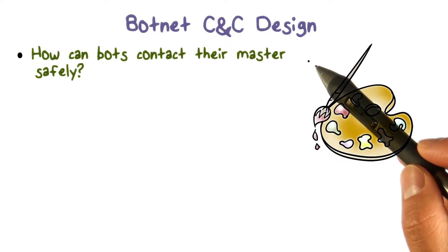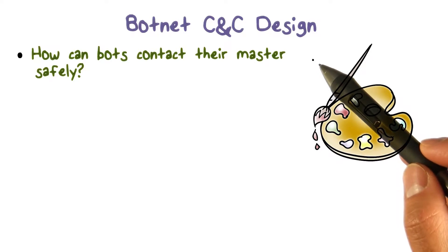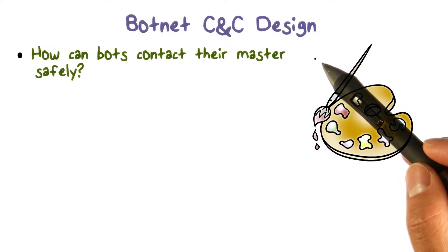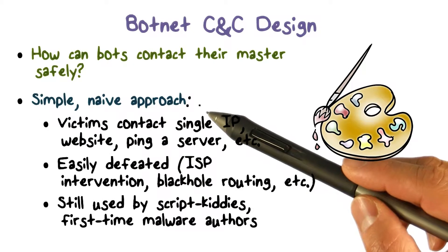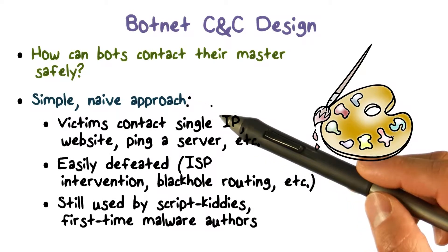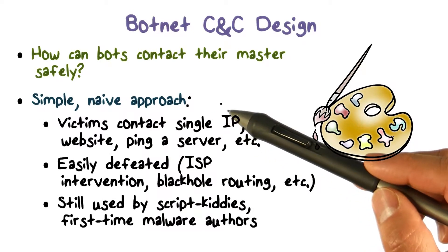It should be clear now that the first question to consider in terms of botnet C&C design is: how can the bots contact their masters safely? In other words, in a stealthy and robust way. And as we have just discussed, a naive approach is not adequate.